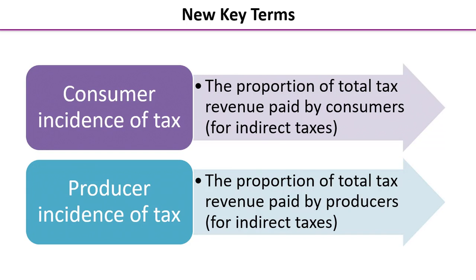We're going to start with some definitions which are on the page in front of you: consumer incidence of tax and producer incidence of tax. It would be great if you could jot down those definitions for your notes. The consumer incidence of tax is the proportion of total tax revenue which is paid by the consumers; similarly, the producer incidence of tax is the proportion of total tax revenue paid by producers. It's easier to see what we mean by this by using diagrammatic analysis, so that's where we're going to head next.